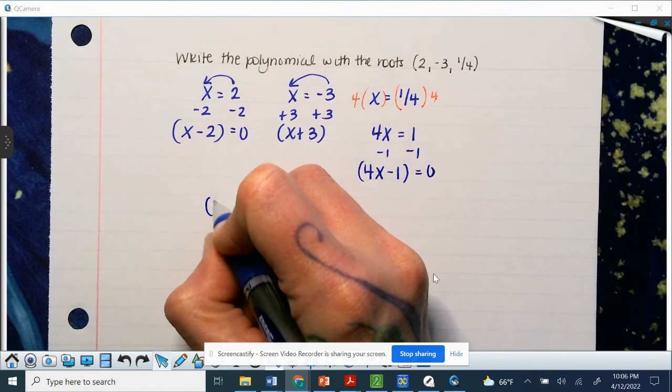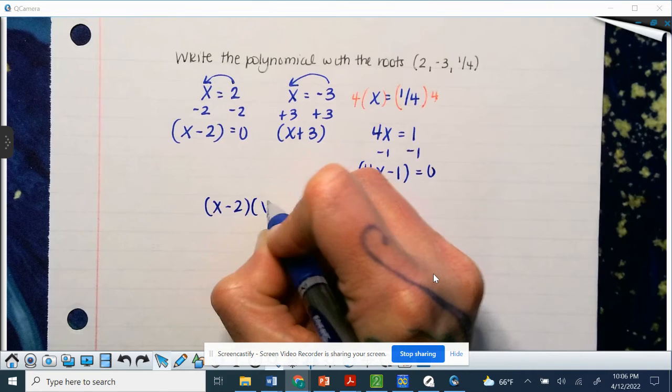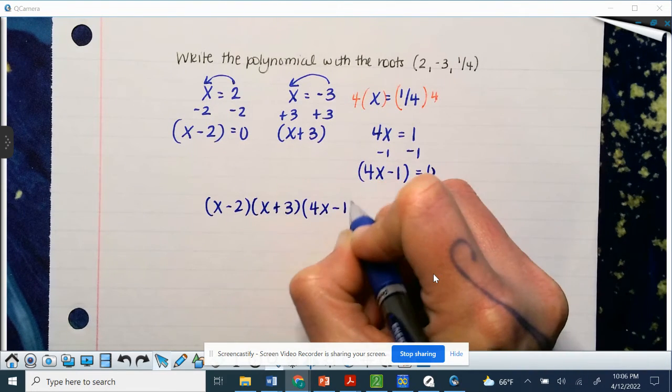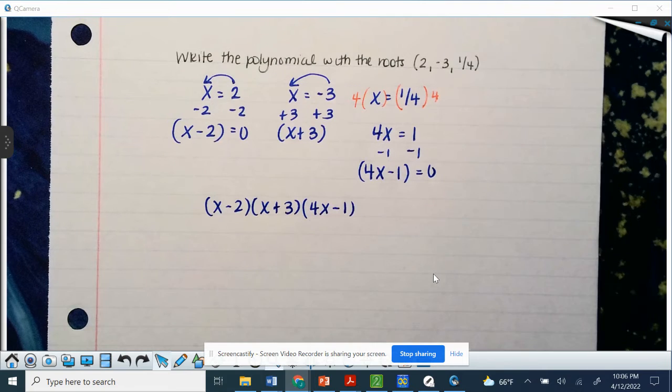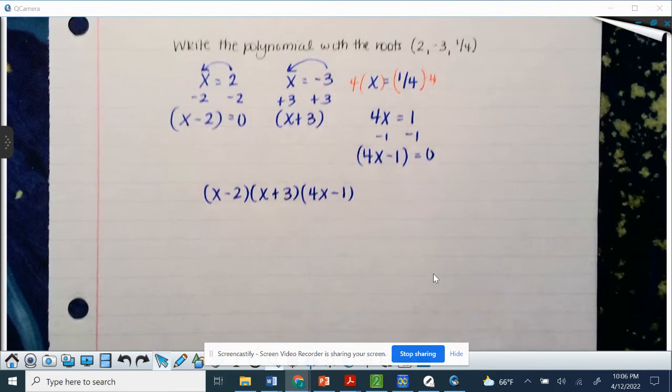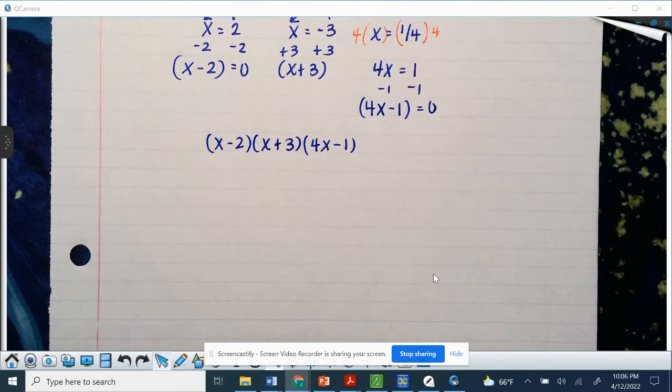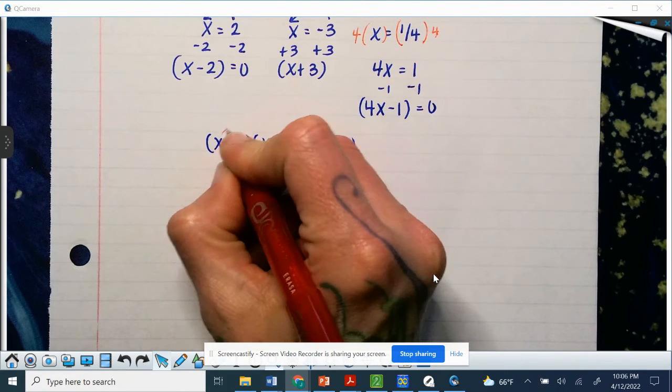Now in factored form, which is not the way they're ever really going to ask you to write the polynomial, these are our list of factors. To finish writing the polynomial, we're going to have to multiply these together. You can do it by FOIL, you can do it by box method, distributive property, whatever makes sense to you from the past that you like best. I'm going to take my first two, and I'll do FOIL for the first one.